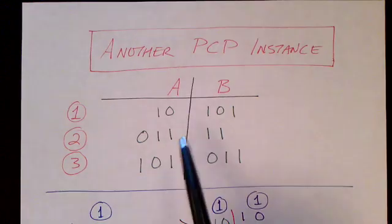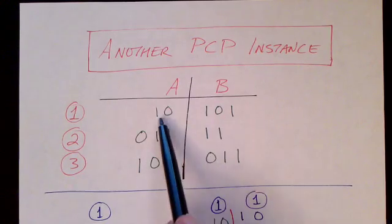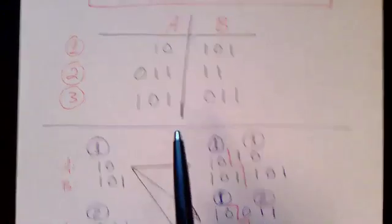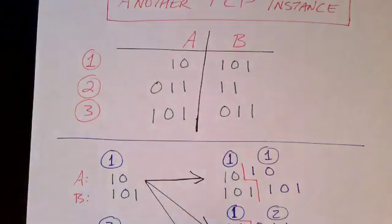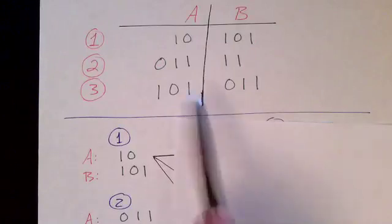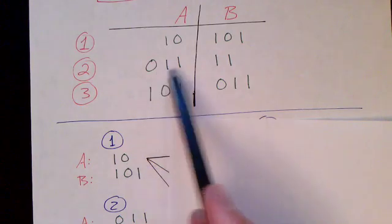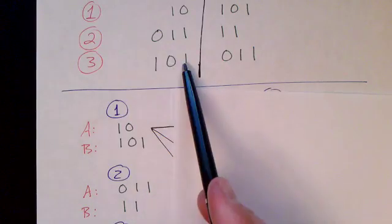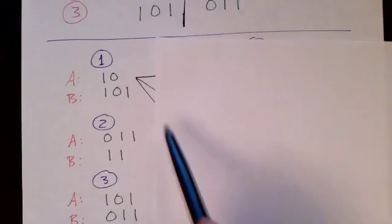Here is another instance of the post-correspondence problem. We have three tiles given here with an A side and a B side, or a top and a bottom if you will. Let's try to find a solution. The first tile we use can either be tile one, tile two, or tile three. So I am going to look at each of those cases. Tile one has one zero, one zero one. Tile two has zero one one and one one. Tile three has one zero one on the top and zero one one on the bottom.